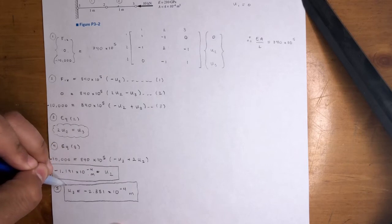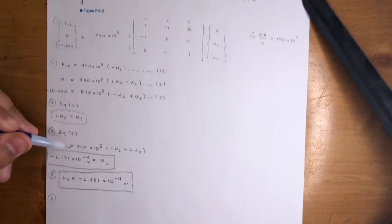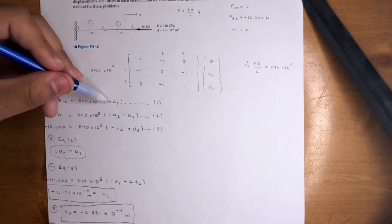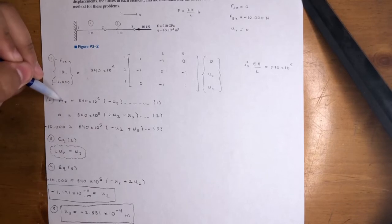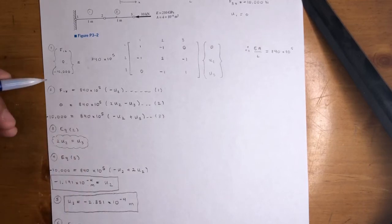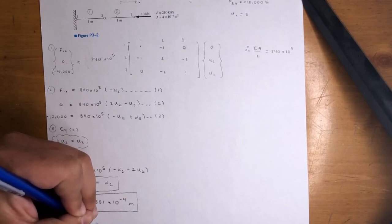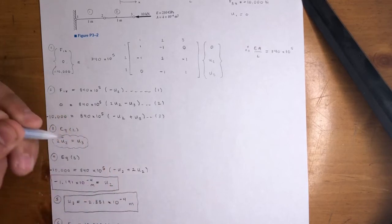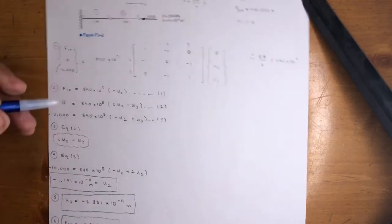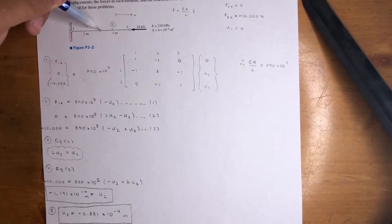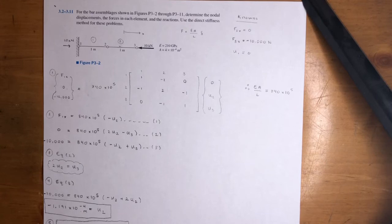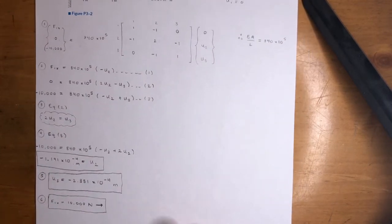Now that we have all displacements, we can find F1x using equation 1: F1x = 840×10⁵ × (-u2). Since u2 is negative, -u2 is positive, so F1x ≈ +10,000 N to the right. That makes sense: if you push 10,000 N to the left at node 3 and the system is in equilibrium, the reaction at node 1 must be 10,000 N to the right.